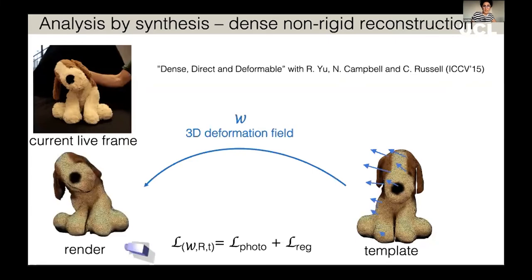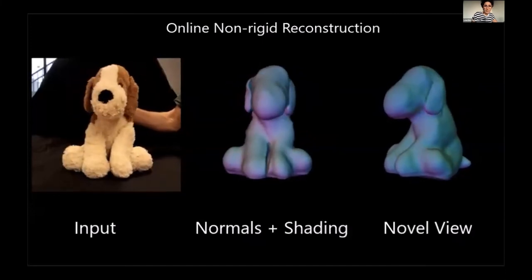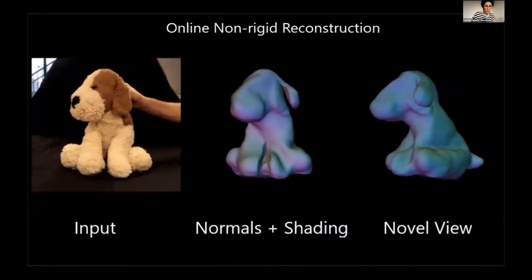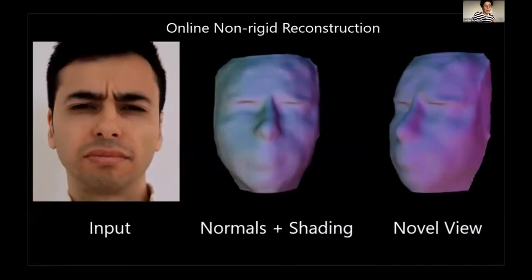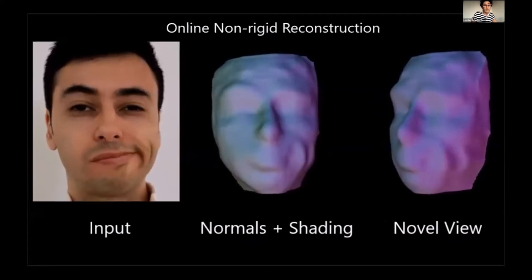The idea here is the same: we learn a dense 3D deformation field that tells us where each vertex is moving in the next frame such that when we render back the reconstructed frame, we get back the observations — in this case, our image. You can see very nice results with pretty strong deformations. This is monocular, a single RGB-D sequence, and we can reconstruct in an online way.